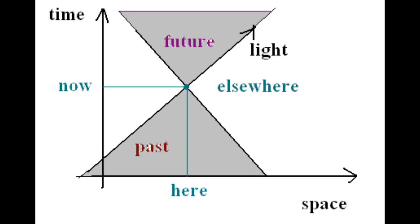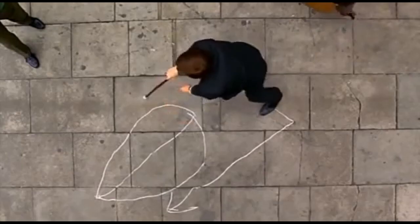Thus, the time is stated on the y-axis and one of the spatial dimensions can be represented on the x-axis. The same diagram is being drawn by Benedict Cumberbatch in this scene.